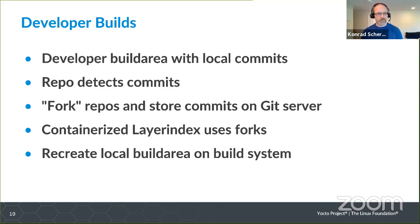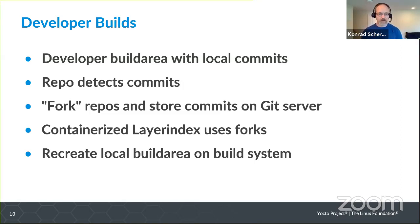So I've created a script that runs repo to detect those local commits. It figures out where those repositories were and forks them — same as you'd have on GitHub or GitLab; we're using Gitolite internally. The repository will be forked into a place where they have write access and the local commits will be stored there. Because we're using a layer index, I actually create a containerized layer index, override the entries in it. Now you have a system where you can pass this to a builder and the builder can recreate the build area as it was on the developer's system.